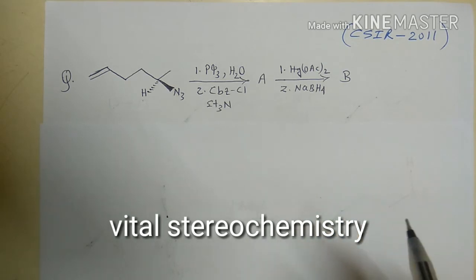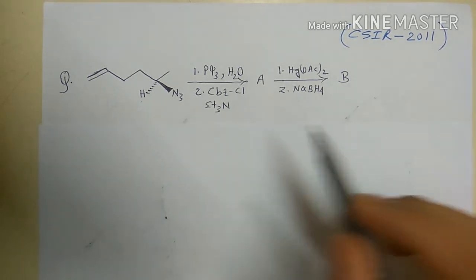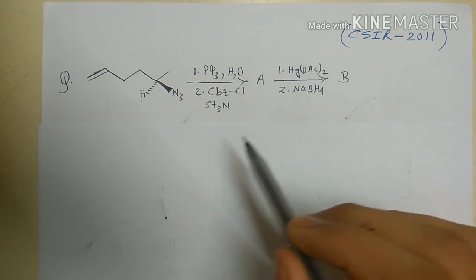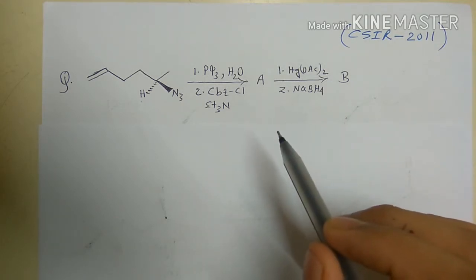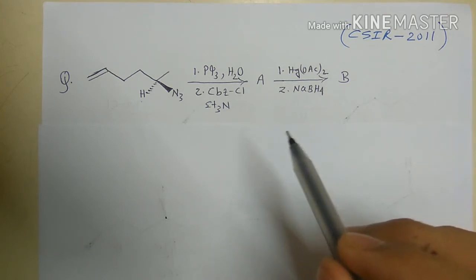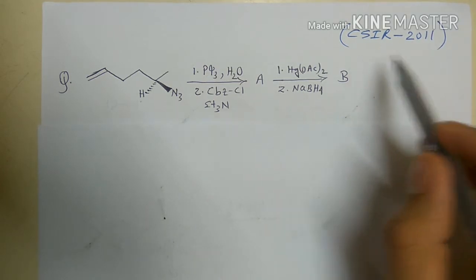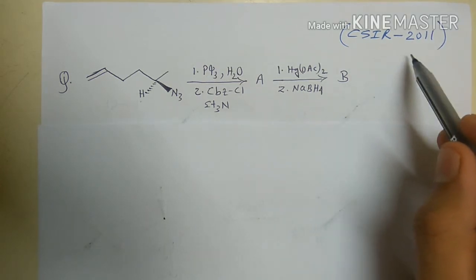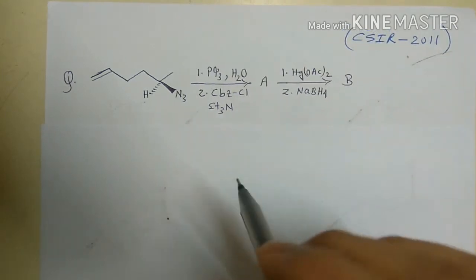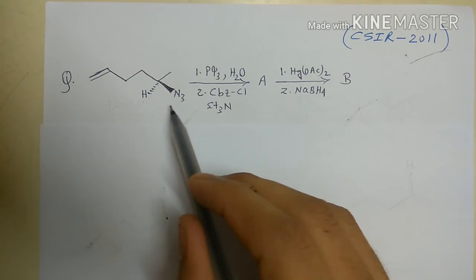Welcome everyone. Today we are going to discuss a very important problem involving stereochemistry — you will learn a lot about stereochemistry from this problem. This problem came in the CSIR exam 2011 and it is a four-marker question.